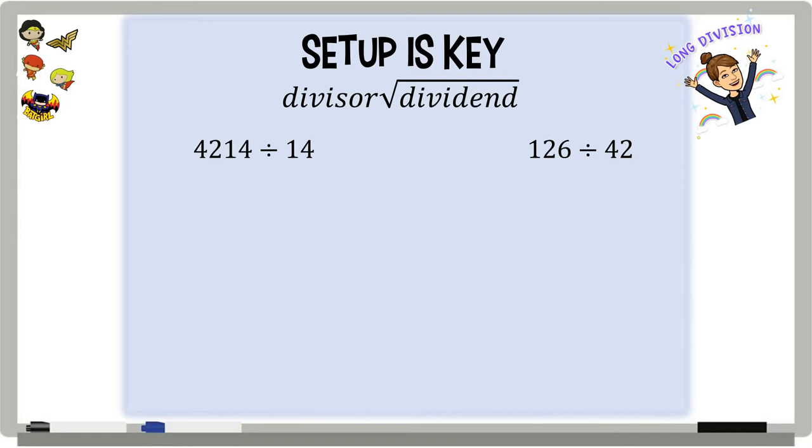So look at it this way. When you're setting up your problem, your problem has to end with the dividend. So you write your divisor, then you write your dividend. So this is 4,214 divided by 14. So I know that 14 is my divisor, because divided by, so 14 is doing the dividing. And then I know that 4,214 is what's being divided, so it is the dividend.